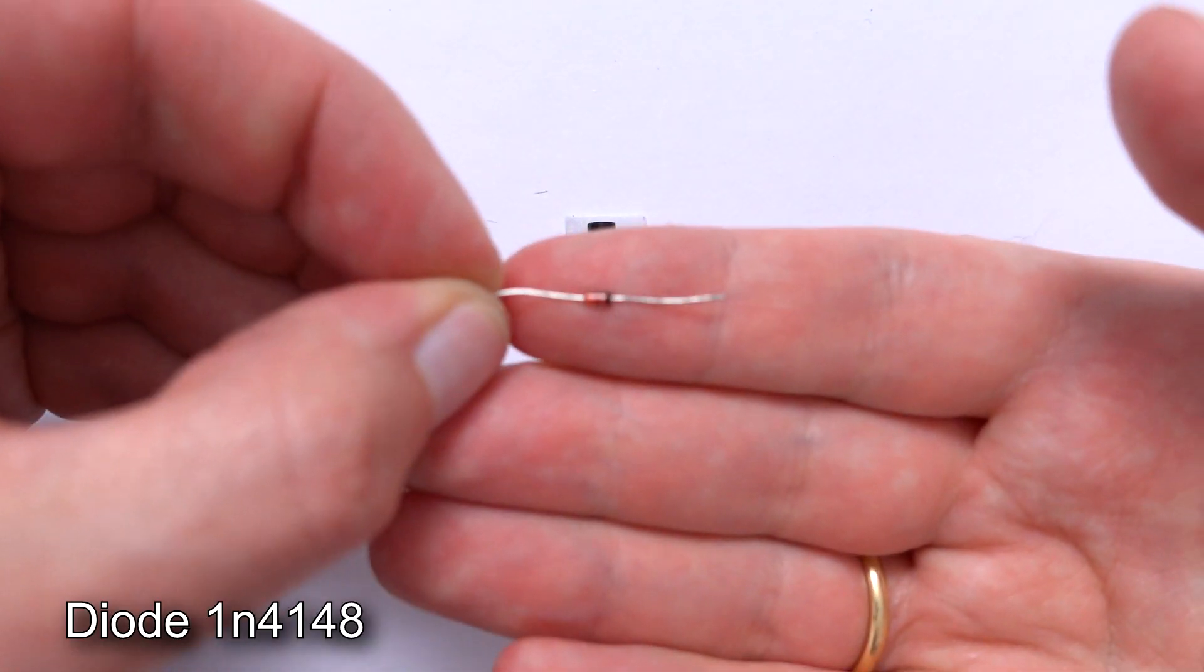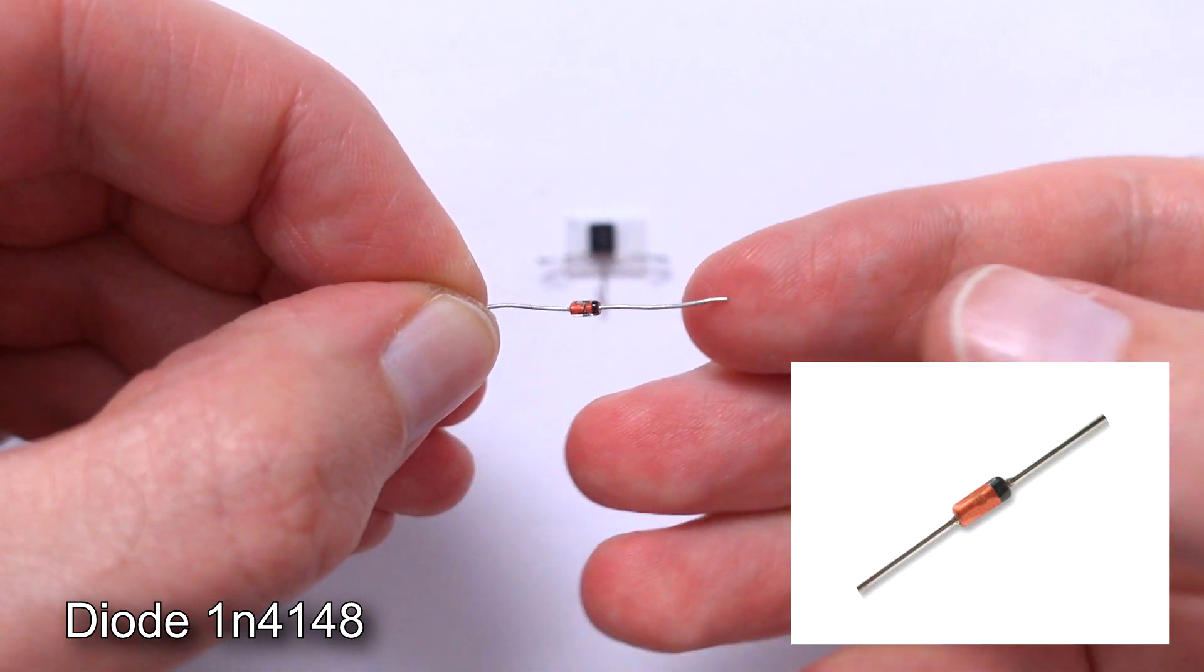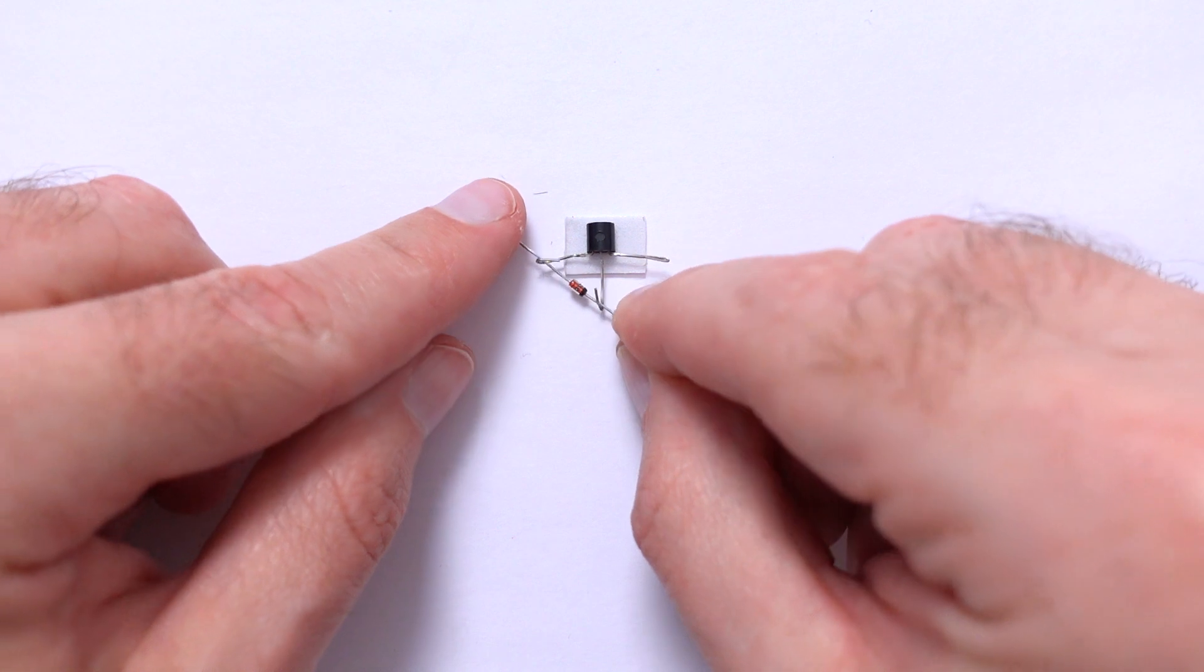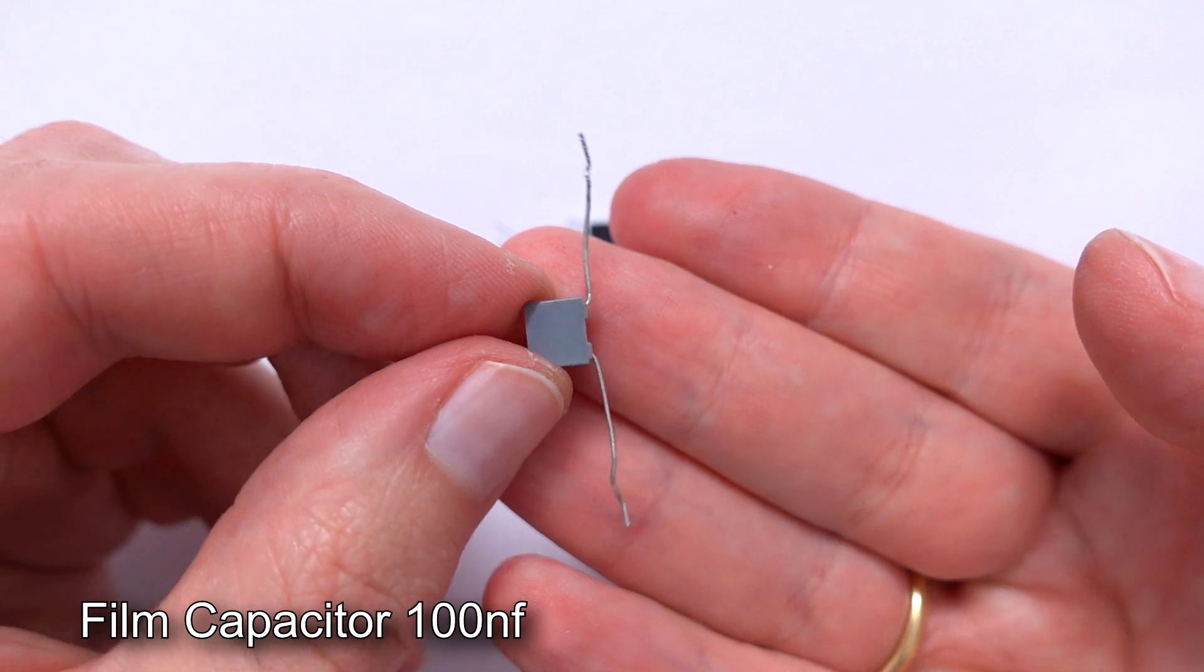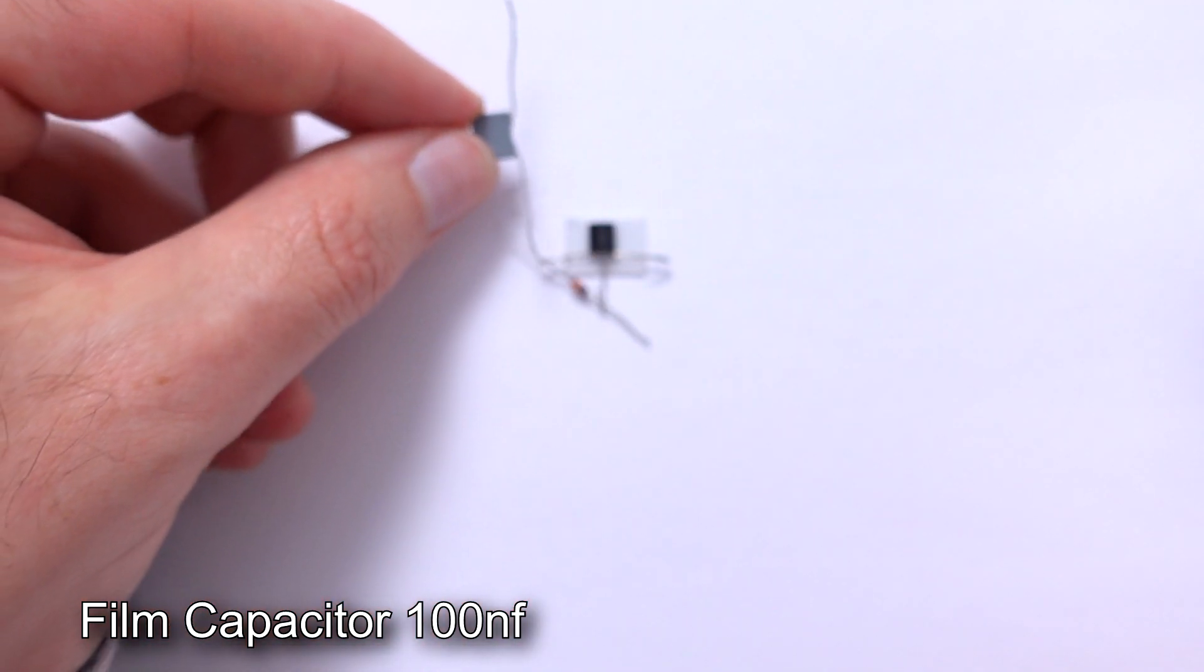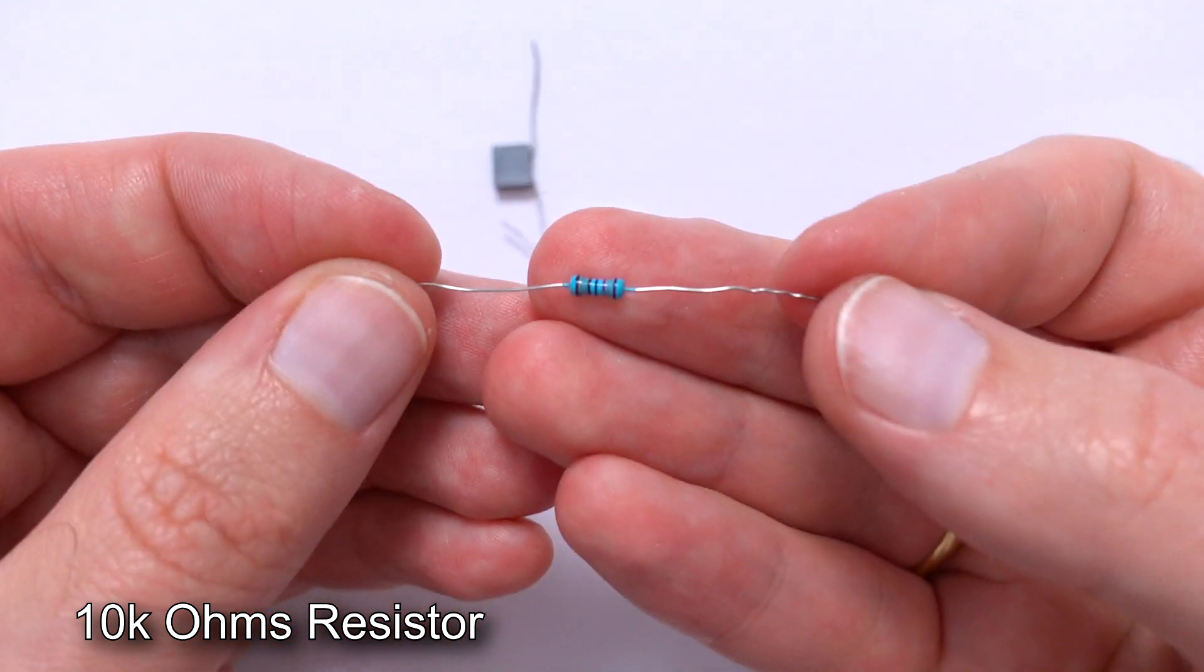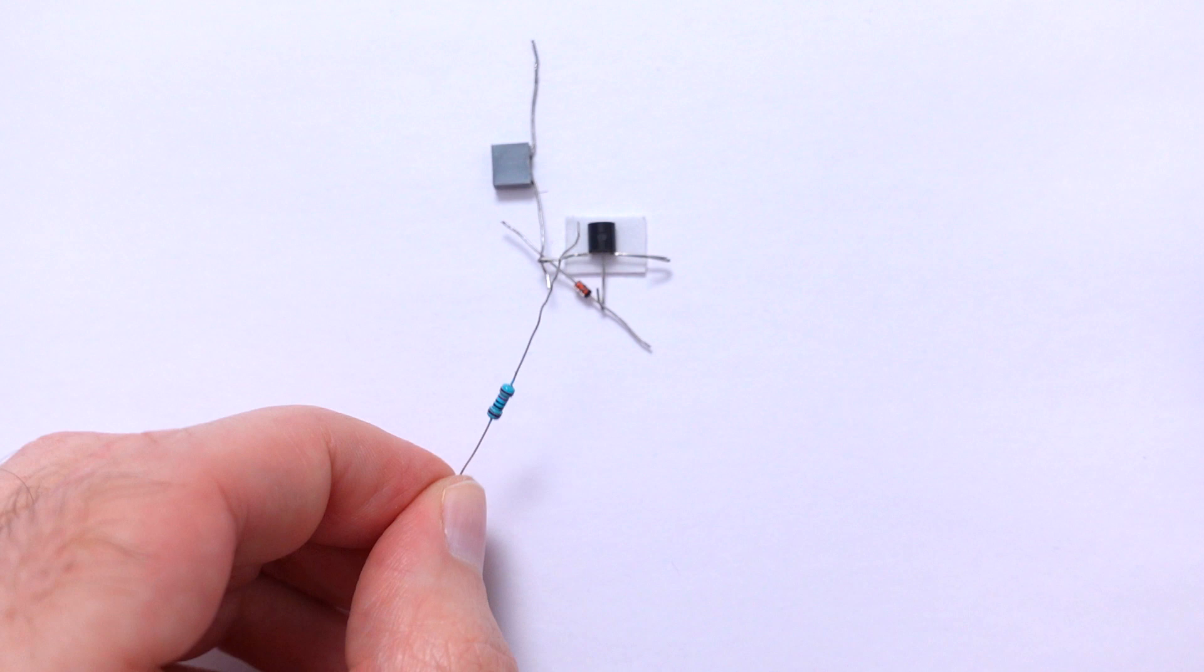Next one, diode 1N4148. It has black mark on one of the sides. We have to attach the side with black mark to the middle pin of transistor and the other side to the left pin. Now put film capacitor 100 nanofarads to the left leg. Now we need 10 kilohms resistor and connect it to the left pin.